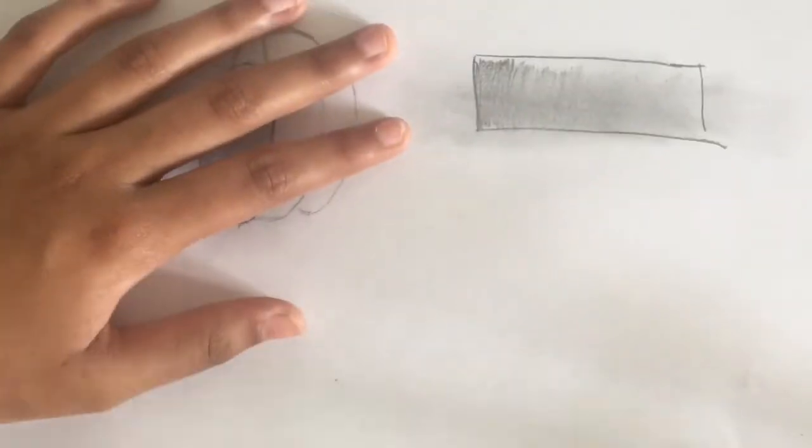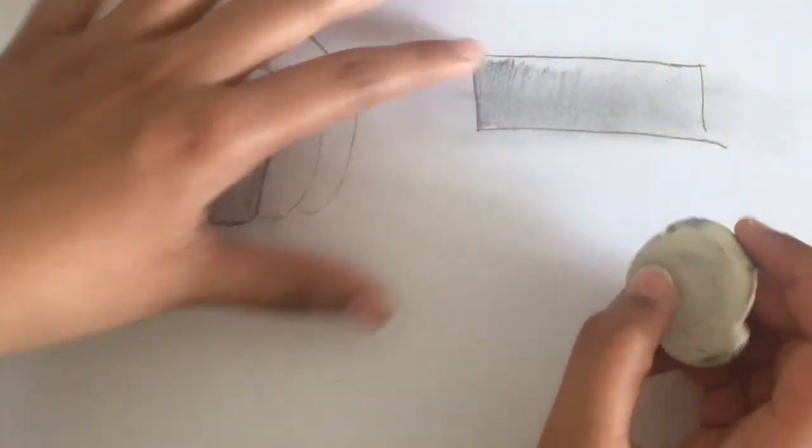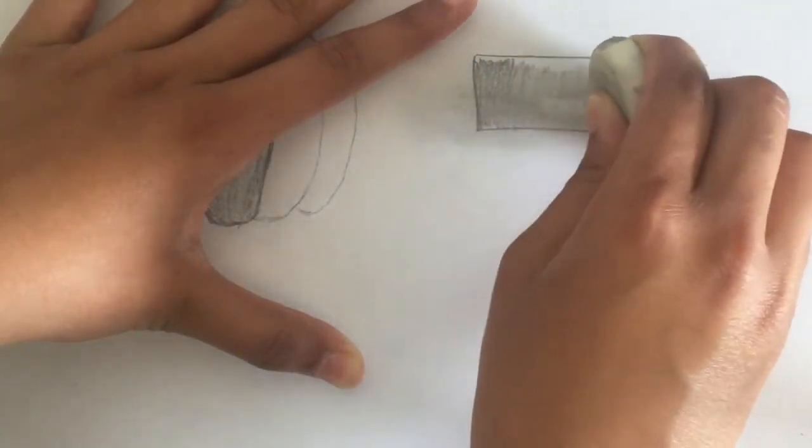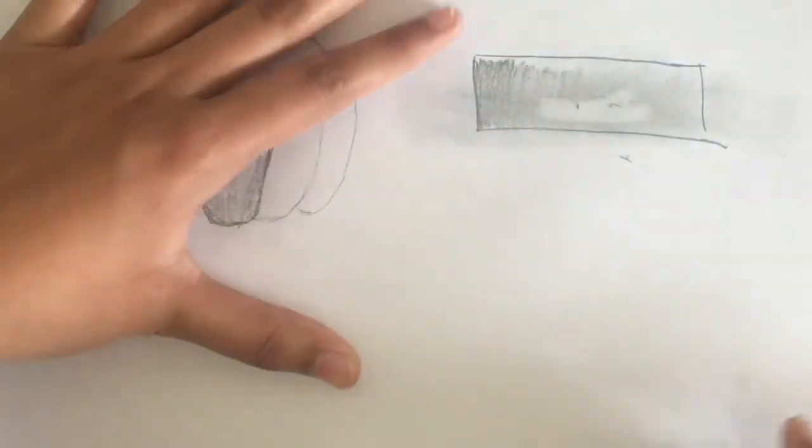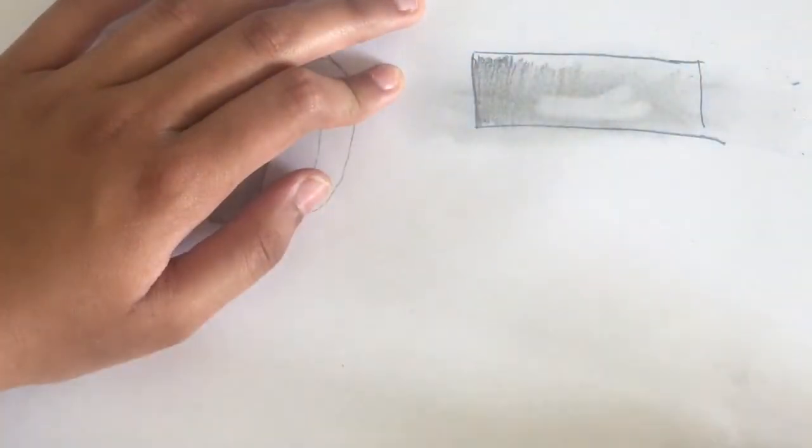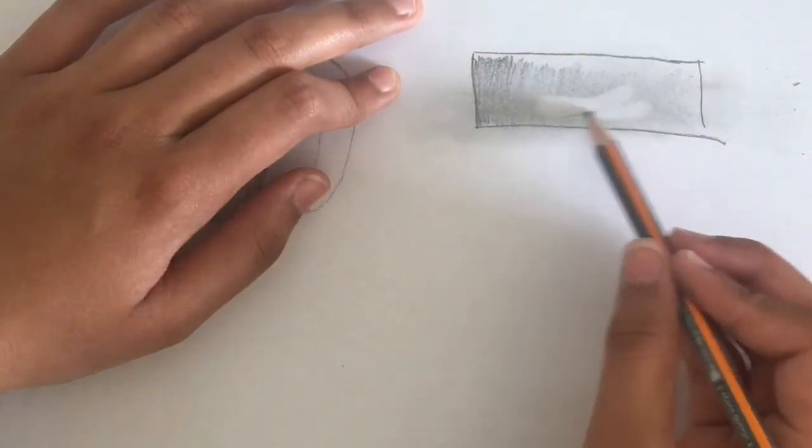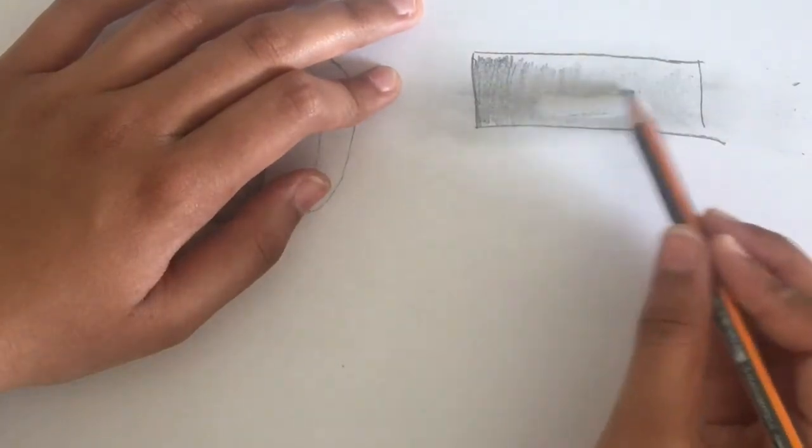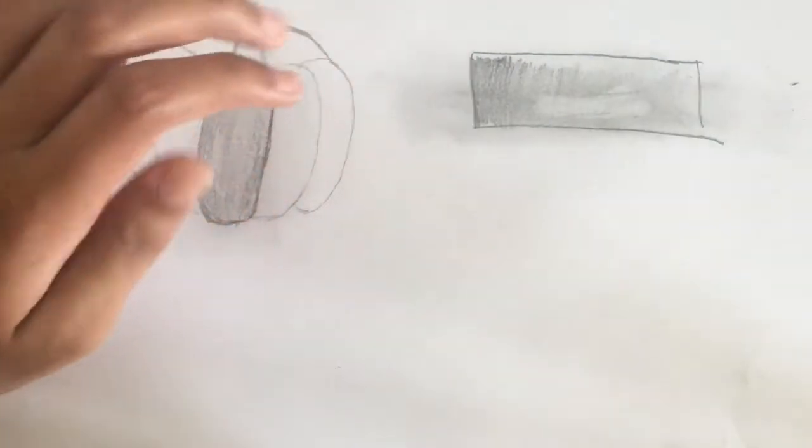Another thing you can do is I'm just gonna do it with my eraser on this rectangle over here. If you want to highlight, for example if you're drawing an apple or something, you can just erase it and then kind of incorporate that as your highlight.